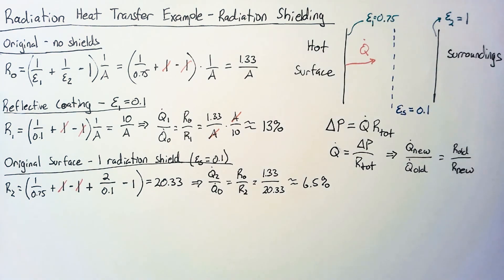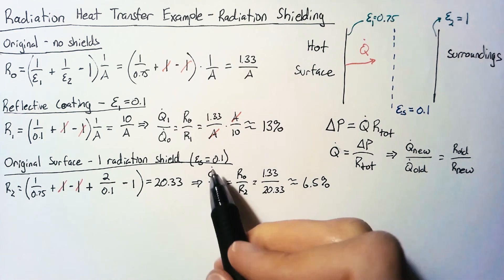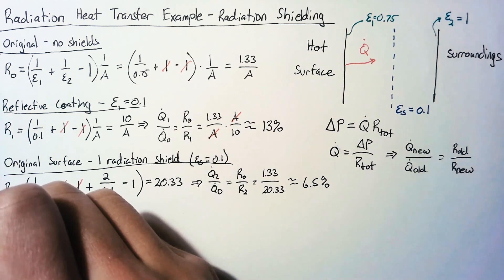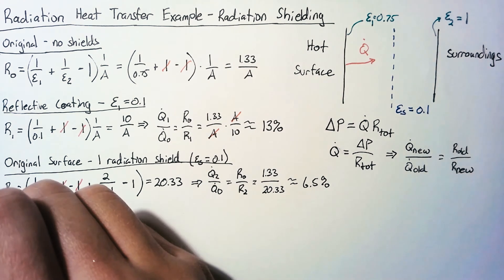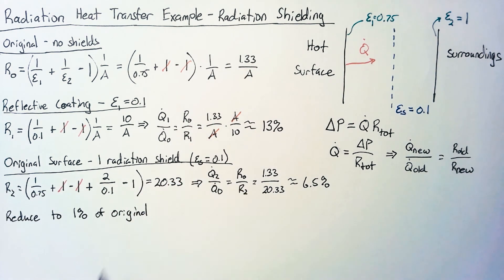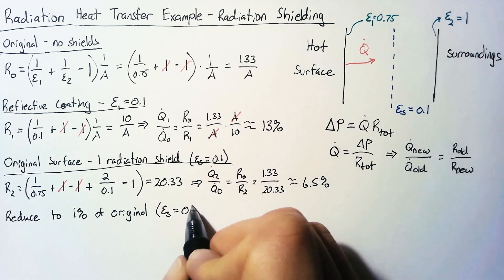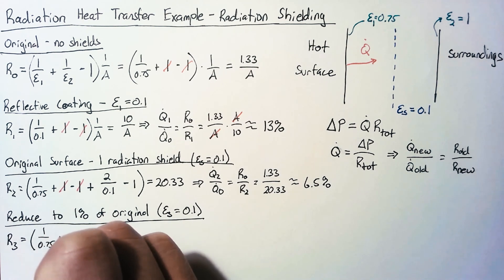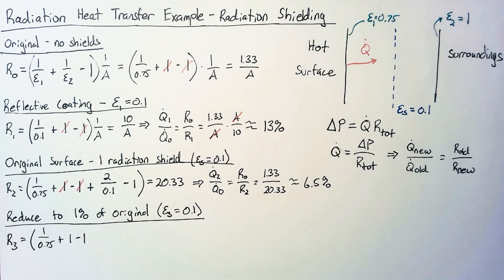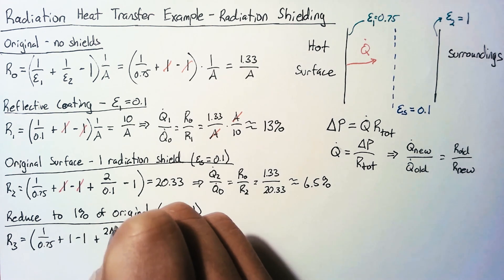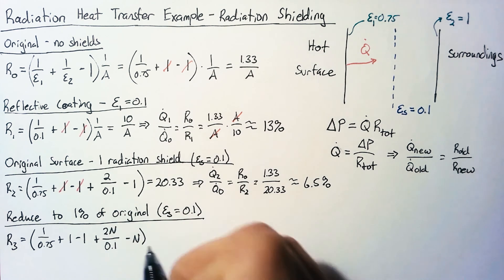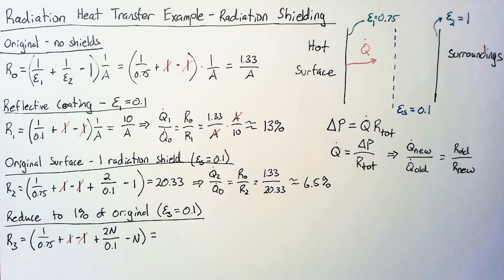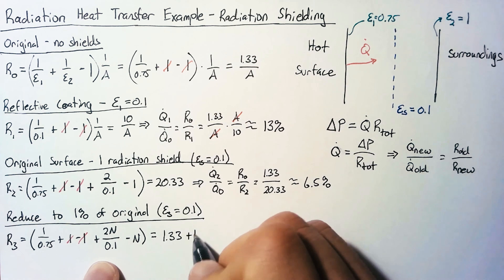6.5% is great, but let's say that's not enough. We want to use more radiation shields to reduce our total heat transfer down to 1% of the original value. We're still going to have the same type of shield — we're just going to have more of them. So R3 is going to be (1/0.75 + 1 − 1) plus (2n/0.1 − n). Simplifying: the first part is 1.33, and the shield term becomes 20n − n, which is 19n. So R3 = 1.33 + 19n.